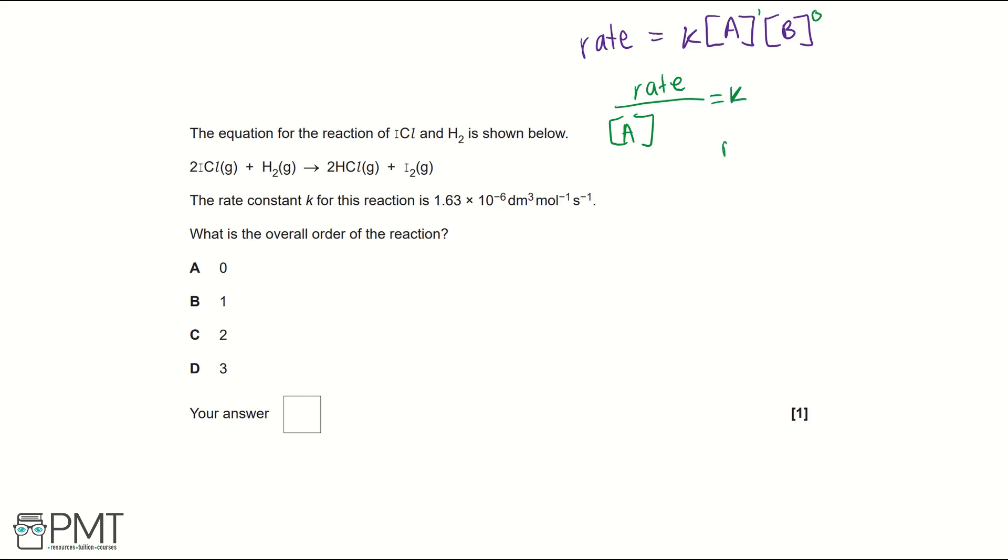So rate is measured in moles per decimetre cubed per second, and then concentration is moles per decimetre cubed. So if this overall reaction was first order, we could cancel out the moles per decimetre cubed, and we would get a rate constant with the units of seconds to the minus 1.